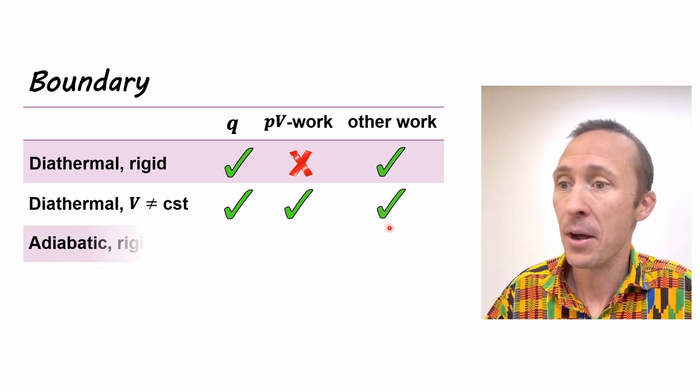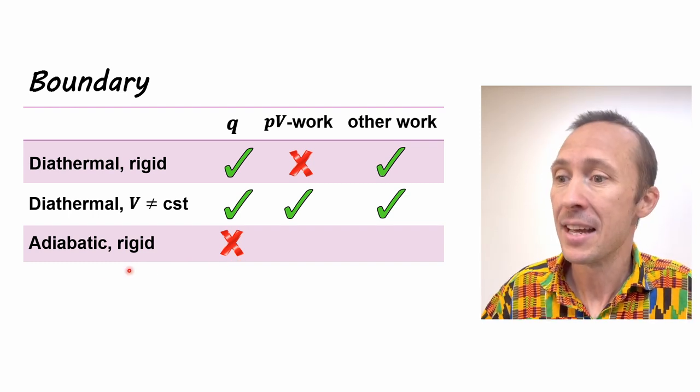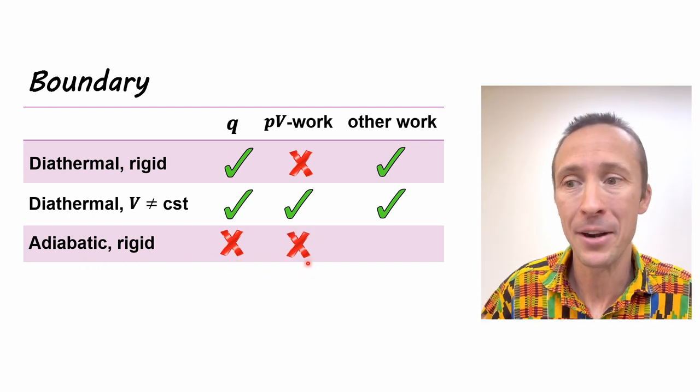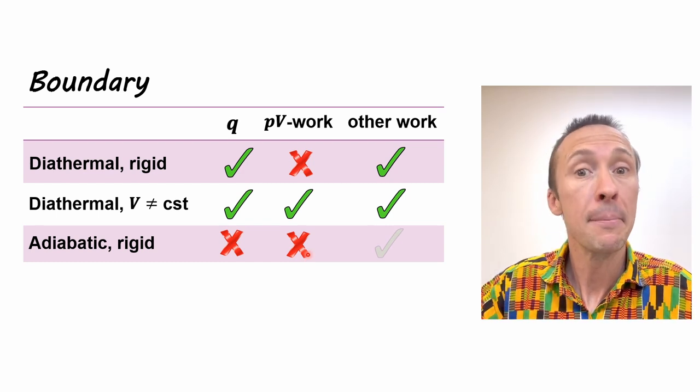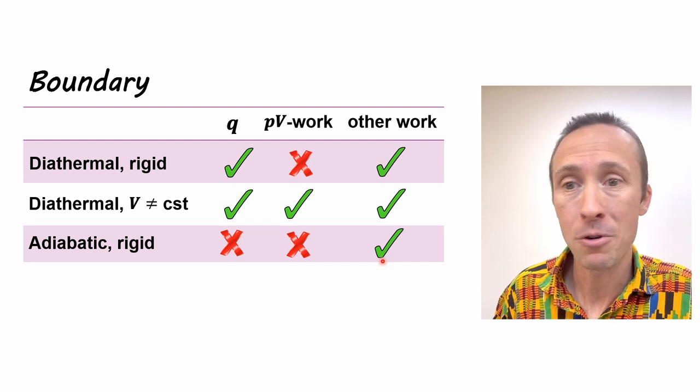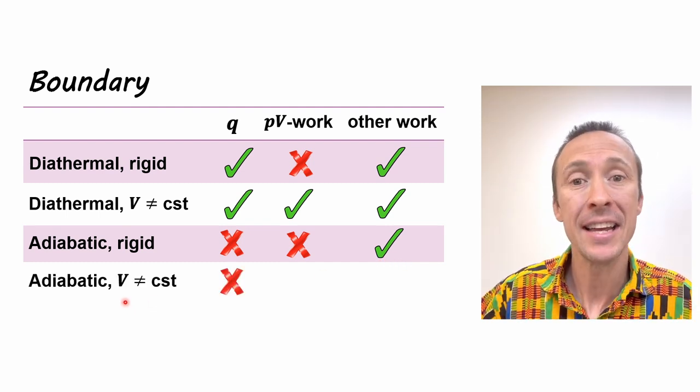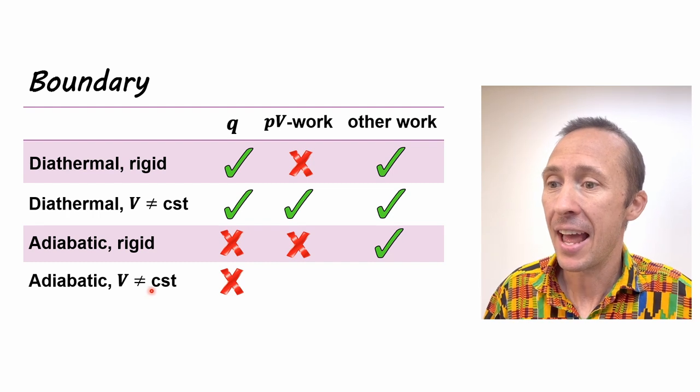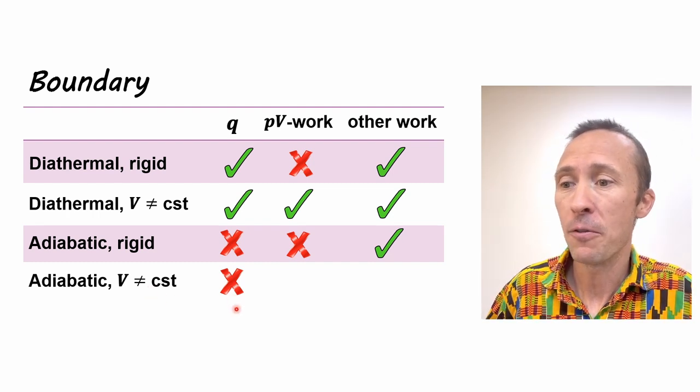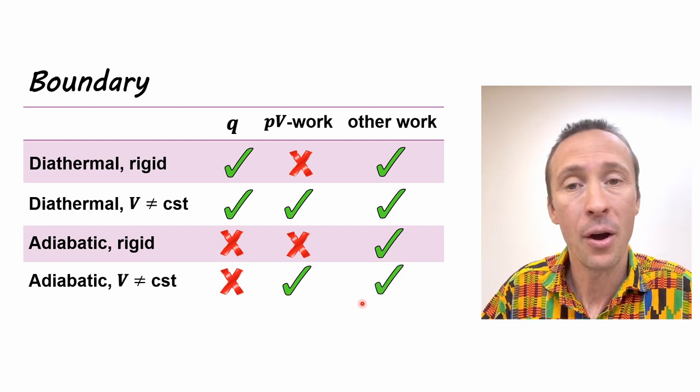An adiabatic boundary does not allow for heat transfer because that's what adiabatic means. If it's rigid, it doesn't allow for pressure volume work because it can't expand or contract. But other work may be allowed if we have electrical work or anything like that, depending on the process. If that adiabatic wall is not rigid, it can expand or contract. Then even though heat transfer is not permitted, it may allow for pressure volume work or other work depending on the process.